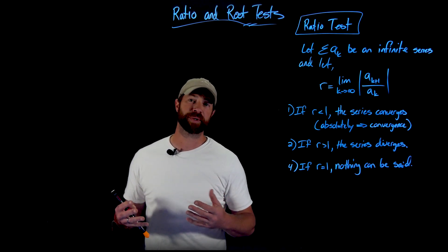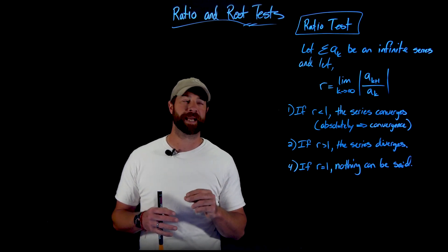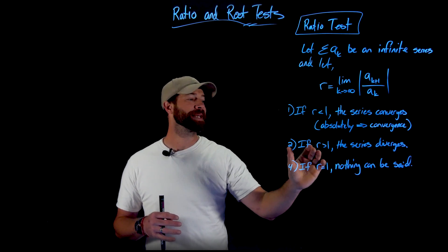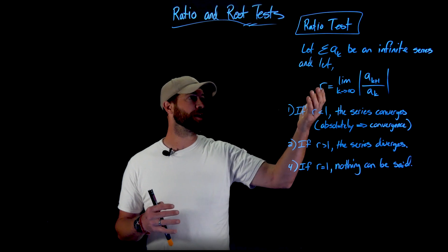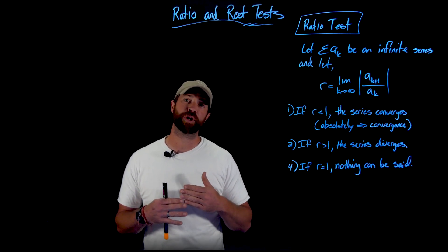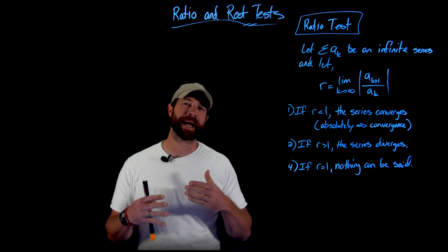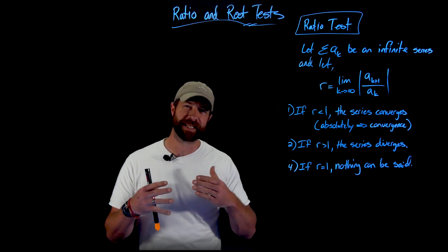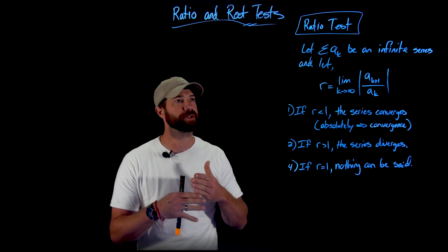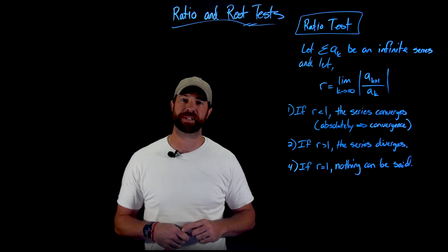As you look at this, you may feel this r value, this ratio, is the same as with the geometric series. And that's actually what's going on. In both of these tests today, this r value describes the long-term behavior of the sequence — the tail of the series acts like a geometric series.